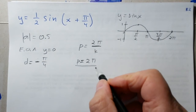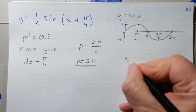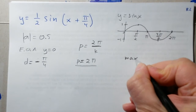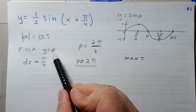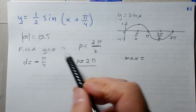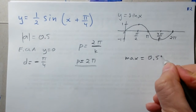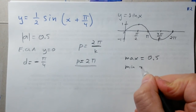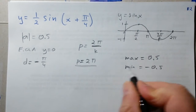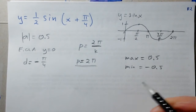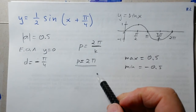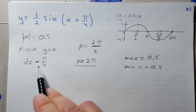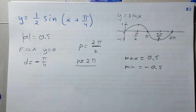What is our maximum value? It's c plus a: c is zero plus a is 0.5, so the maximum value is 0.5. The minimum value is negative 0.5. Now we've got everything — the base function, amplitude, period, equation of axes, and d value. Let's sketch this now, starting at negative pi over four.